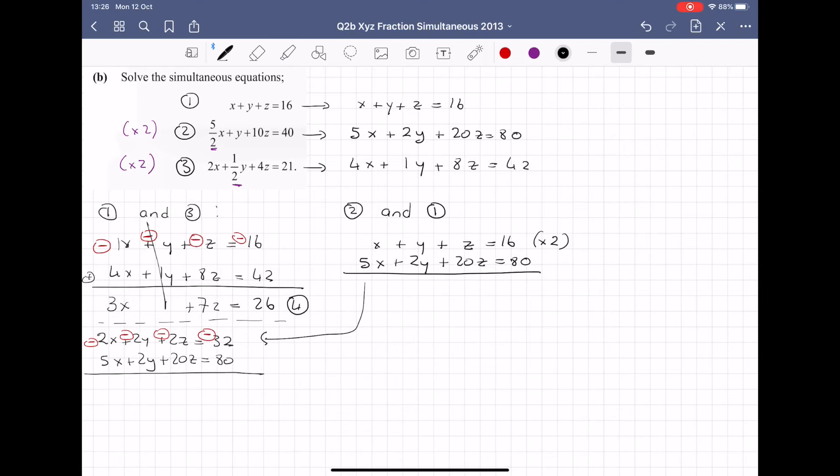So 5x minus 2x is 3x. My y's have cancelled. 20z minus 2z is 18z. 80 minus 32 gives me 48. And I'm going to call here my equation 5. So you can see in this equation, I have x terms and z terms. So it was so important in this question that when I took my pairs of equations, so 1 and 3 in this case, 2 and 1 in this case, that I cancelled the same letter. So I cancelled y's here, so I had to cancel y's in this case.